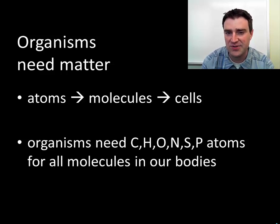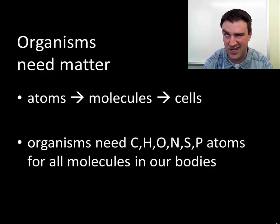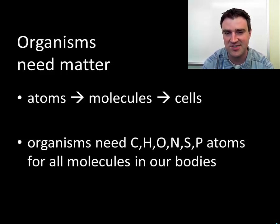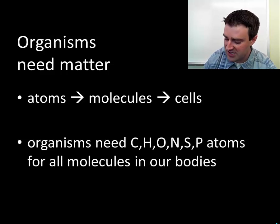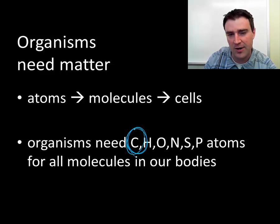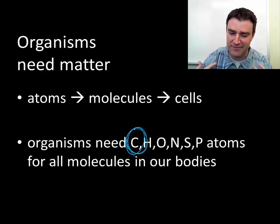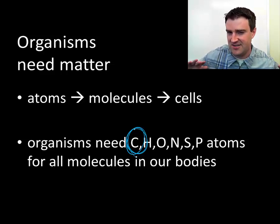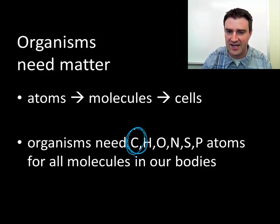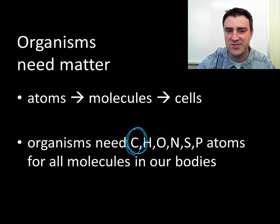A lot of textbooks will talk about cycles in ecology for each of these atoms broadly — carbon, water, nitrogen, phosphorus, and sulfur cycles in some cases too. We're just going to focus on the carbon cycle for the most part in this course, because carbon really is the backbone of all of the molecules we're going to talk about later in the cells unit. We want to focus on how we get access to the carbon we need to build up our bodies.